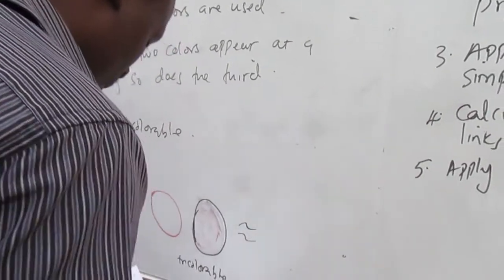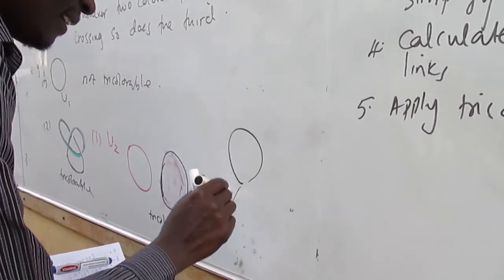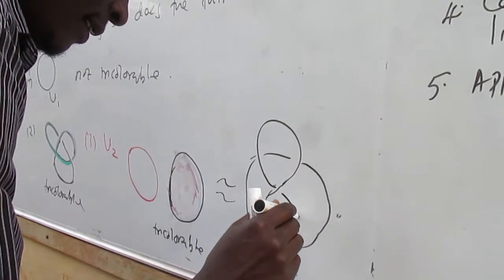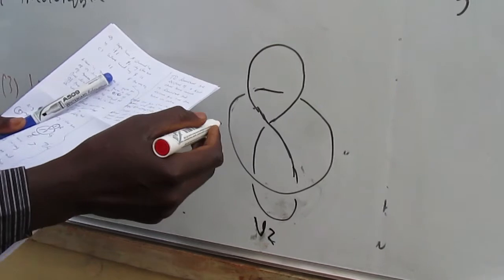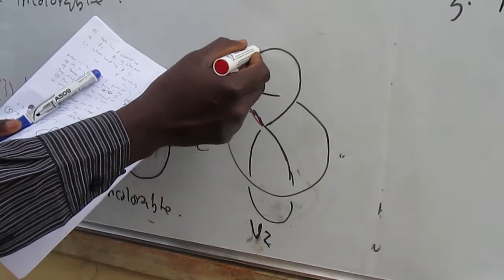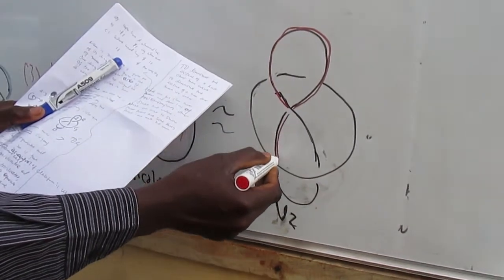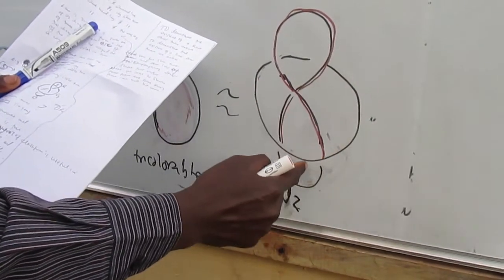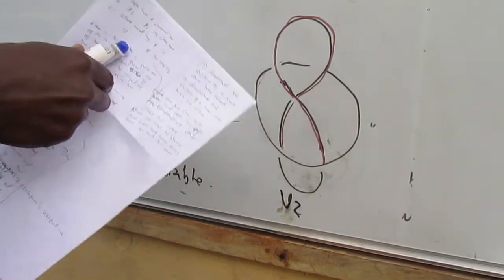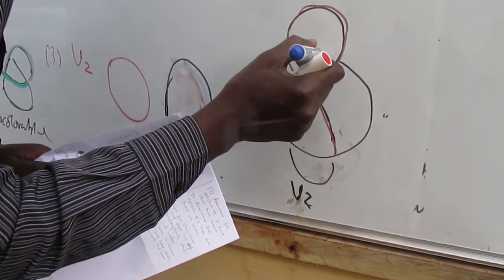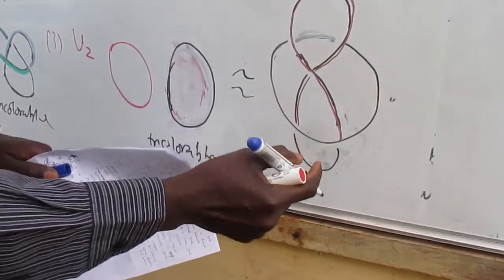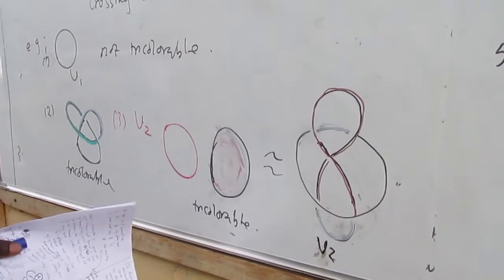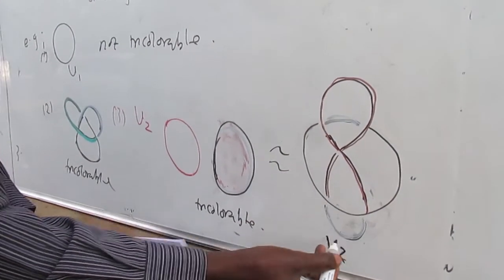An equivalent representation already seen can also be colored: color one arc red, another arc black, and since we already have black then this next arc must be blue. Using two colors only you can color another arc blue as well. We have used exactly three colors such that at any crossing where two colors appear, the third also appears.